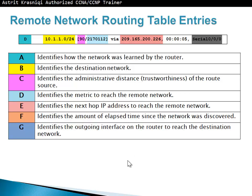Remote networks have more information in the routing table entry. Label A identifies how the network was learned — D means it was learned through EIGRP, S means a static route, R means it was learned through RIP, and O means learned through OSPF. The destination network section identifies the destination address, for example 10.1.1.0/24 learned via EIGRP. Label C identifies the administrative distance — the trustworthiness of the route source. EIGRP has a default administrative distance of 90.